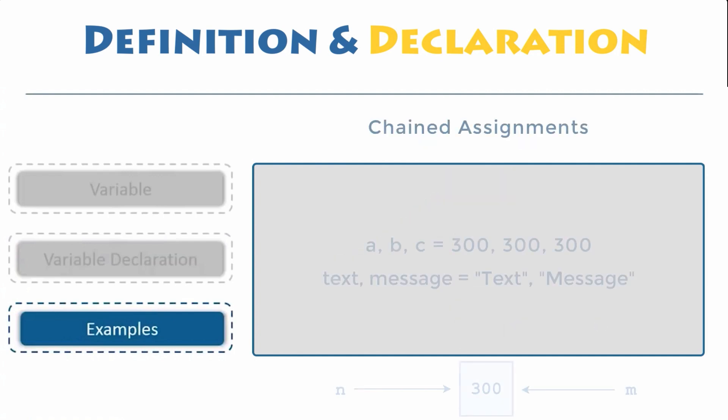Python also allows chained assignment, which makes it possible to assign the same value to multiple variables. The chained assignment above assigns 300 to the variables a, b, and c simultaneously.